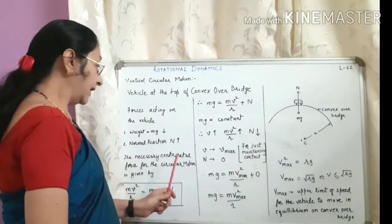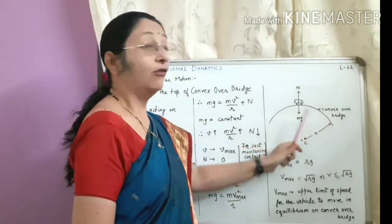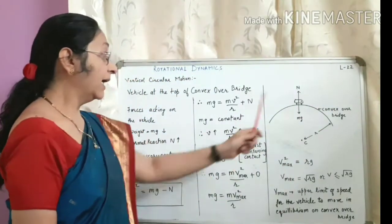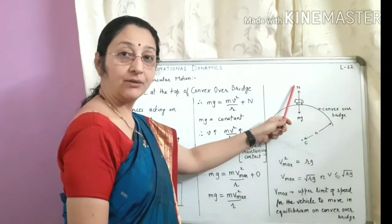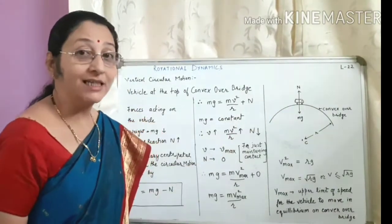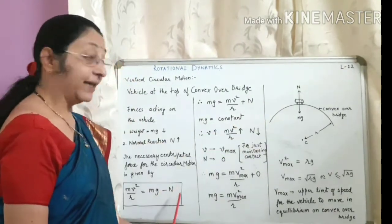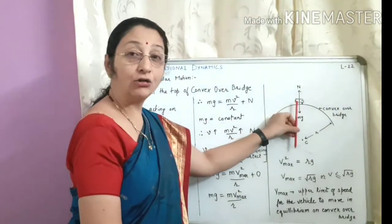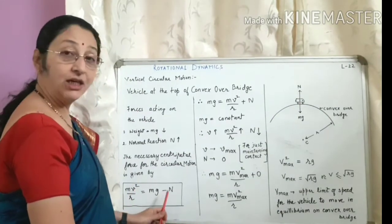The necessary centripetal force for the circular motion of the vehicle over the convex bridge is given by mg and N, the normal reaction. Since both are in opposite directions, we write Mv²/R = Mg − N, because the direction of the centripetal force is always along the radius towards the center.